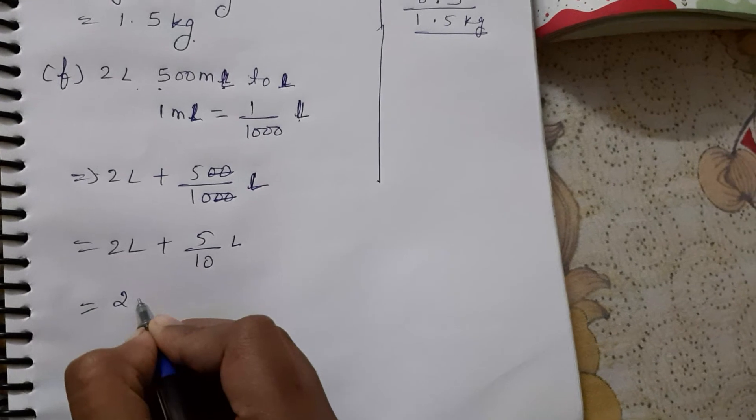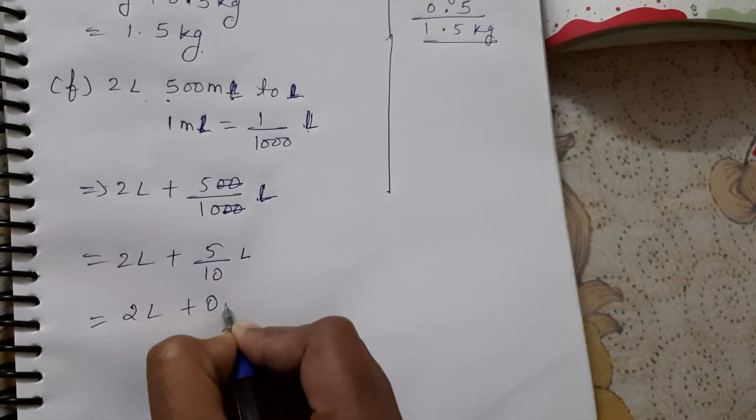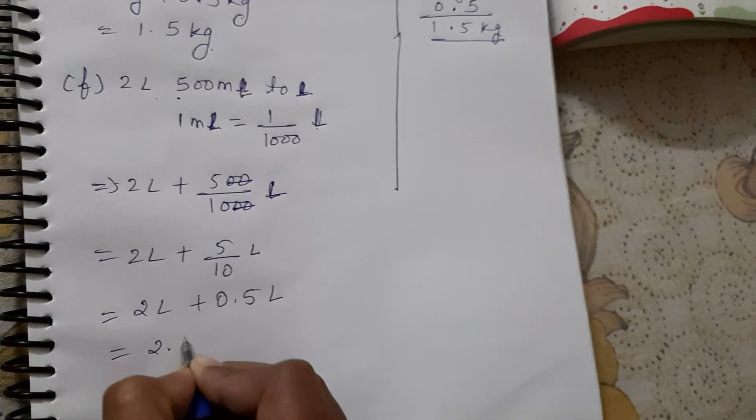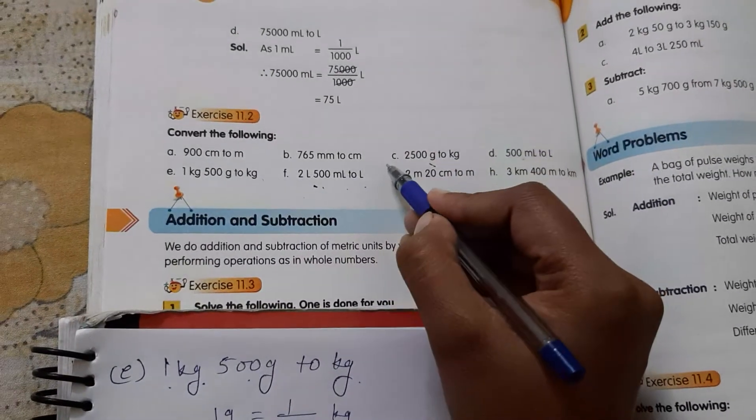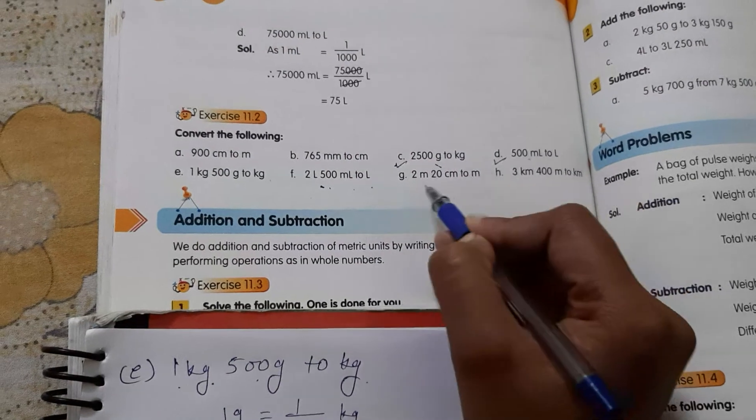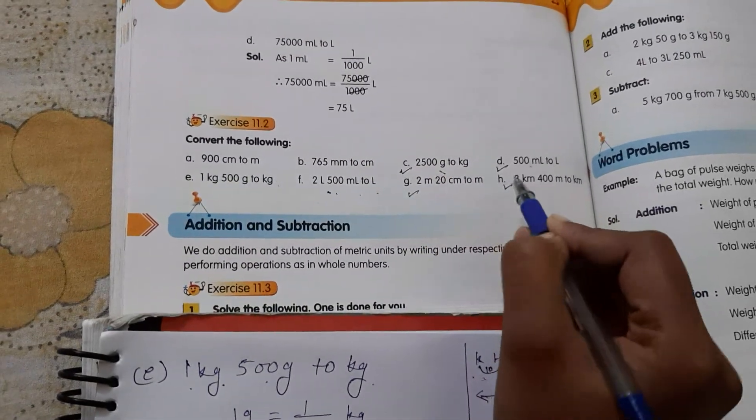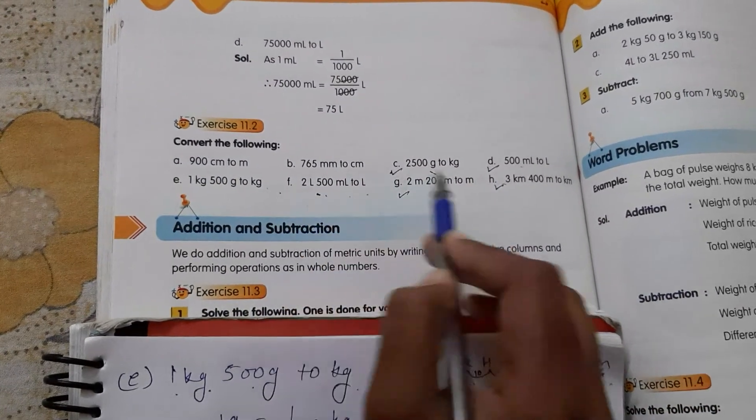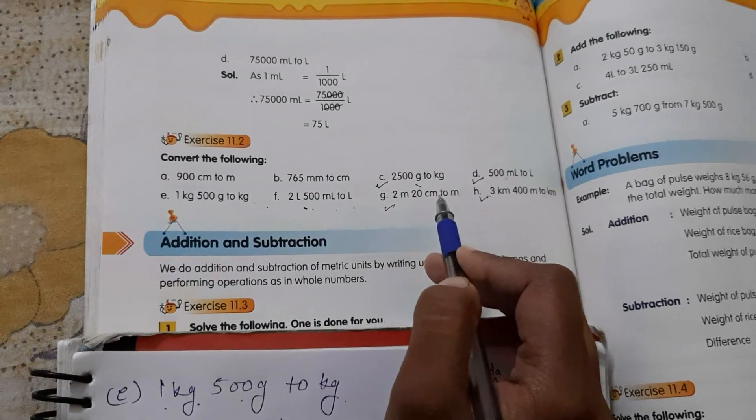Now, two liter plus zero point five liter. When we add, what do we get? Two point five liter. So do as homework C, D, G and H. Take help of the previous questions and solve it. Take care all of you. Bye bye.